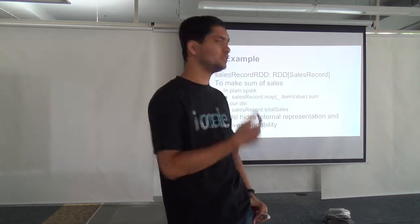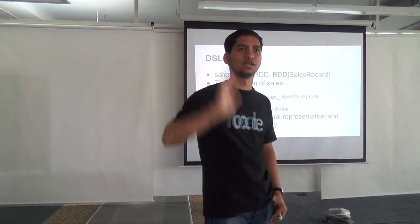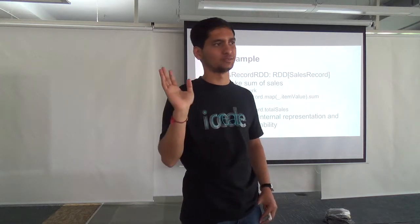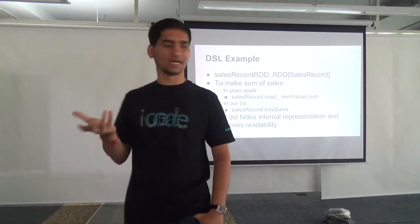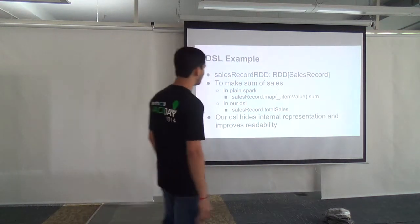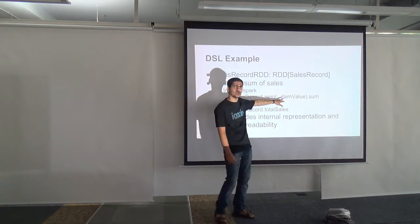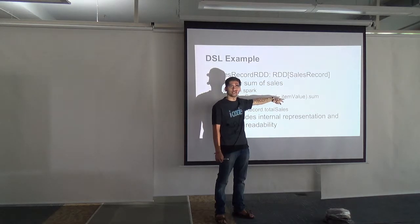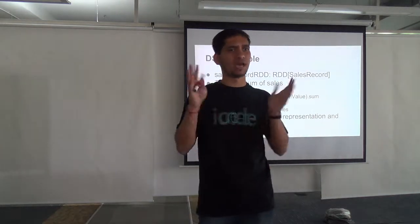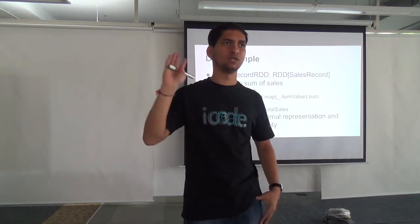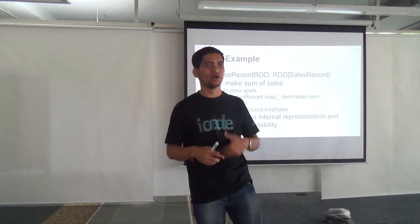Suddenly readability and maintainability improve, because I just say total sales and I don't care whether internally it uses map, reduce, or something else. You can build a library of operators specific to your domain. Also, the DSL hides the internal representation. If the sales report structure changes, the user's code doesn't change — only the library needs to update. The user always says total sales; which column and how to read it is the library's concern. But it has to feel like a built-in, not something layered on top of objects.